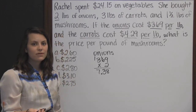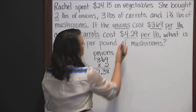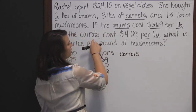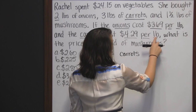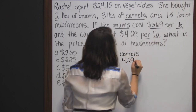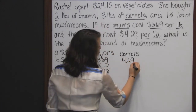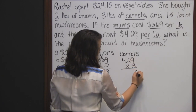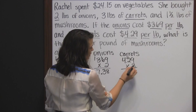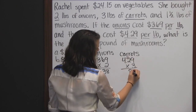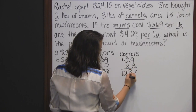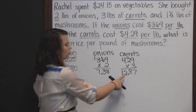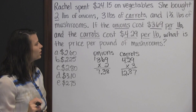We're going to do something similar to find the total amount spent on carrots. The carrots were four dollars and twenty-nine cents per pound, so 4.29 times 3, since she bought three pounds. Three times nine is twenty-seven — write the seven, carry the two. Three times two is six, plus two is eight. Three times four is twelve. Two numbers behind the decimal, so she spent a total of twelve dollars and eighty-seven cents on carrots.